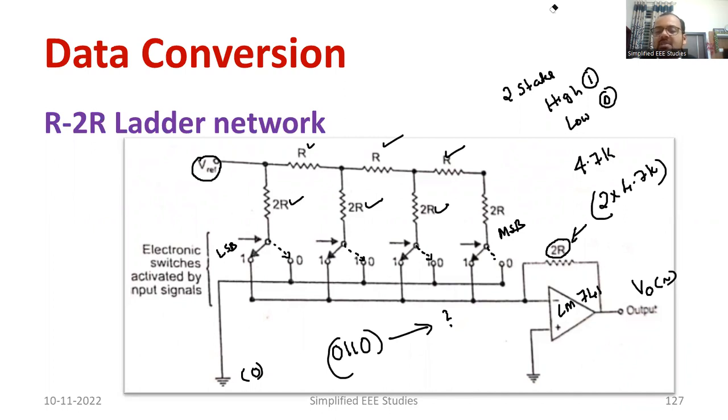But the drawback is the network is a little bit complicated compared to the weighted resistor network. That is only the setback. Other than that, everything is fine.